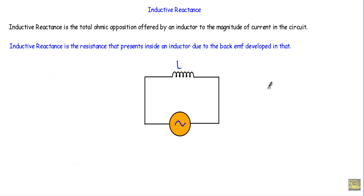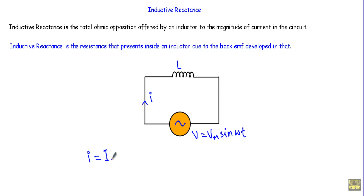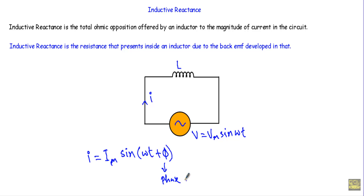Consider this pure inductive circuit. I am applying an alternating voltage V equal to Vm sin(ωt). The inductance of the inductor is L. Since I am applying a sinusoidal voltage, I get a sinusoidal current in the circuit. The equation of the current is given by I equal to Im sin(ωt + φ), where φ indicates the phase shift. Since I is time-varying, it is not constant.